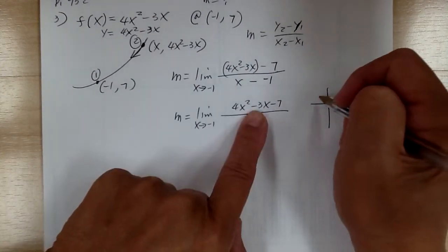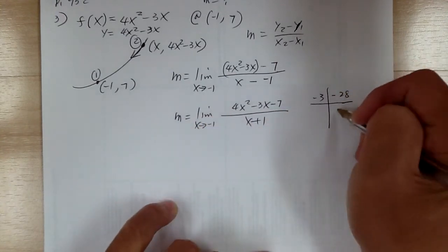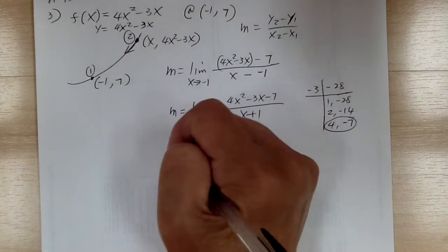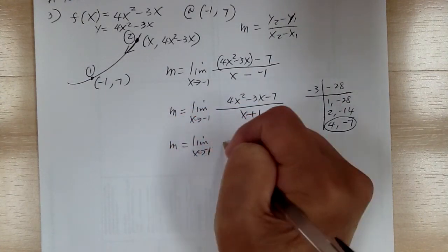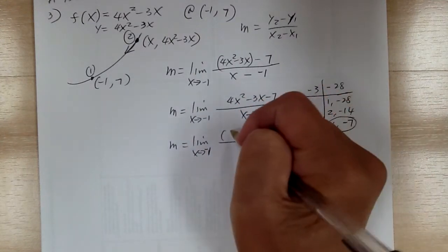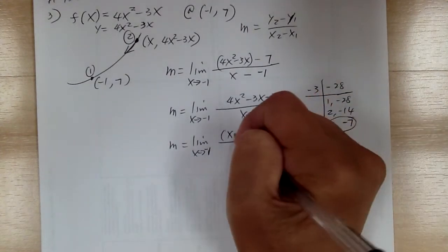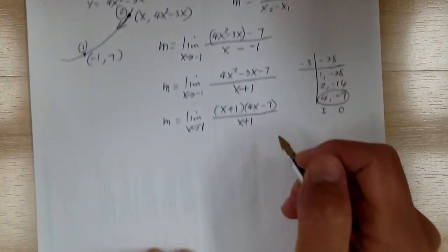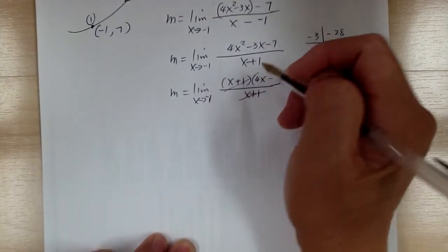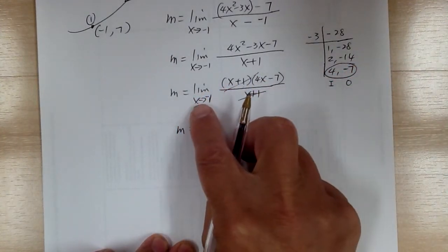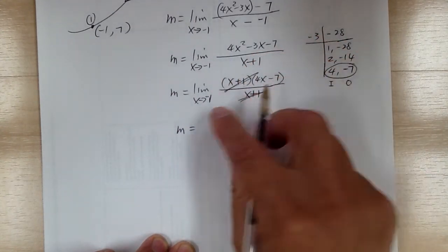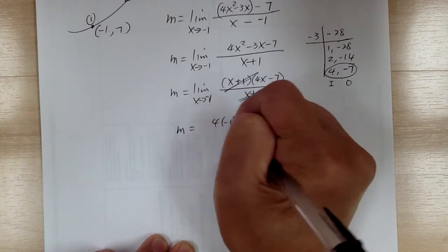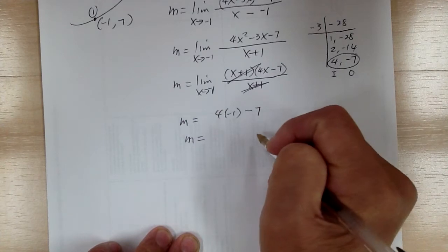Do your master product — you get negative 3 times negative 28. Factor pairs: 4 and negative 7 works. When you do the factoring, you see x and 4x. The inside would be plus 1 — this gives you the clue. The outside would be minus 7. Notice this would cancel out. Then you can substitute once this is canceled. Before, when you substitute, you get 0 on the bottom, so you cannot. This would be equal to 4 times negative 1 minus 7. So slope would equal to negative 11.